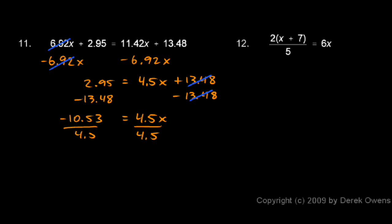Those cancel out, I'm left with x all by itself. X is equal to -10.53 over 4.5, and it's perfectly appropriate to use a calculator here. -10.53 divided by 4.5 is -2.34.